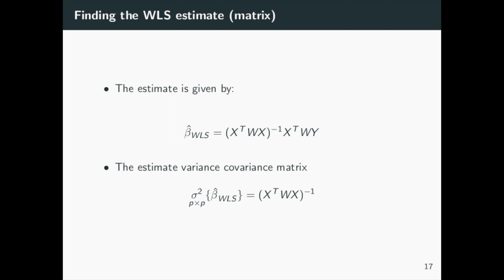Our vector of estimated regression coefficients is denoted as beta hat WLS and is equal to the product of the matrices provided, with matrix W being a diagonal matrix with the individual weights occupying the diagonal.